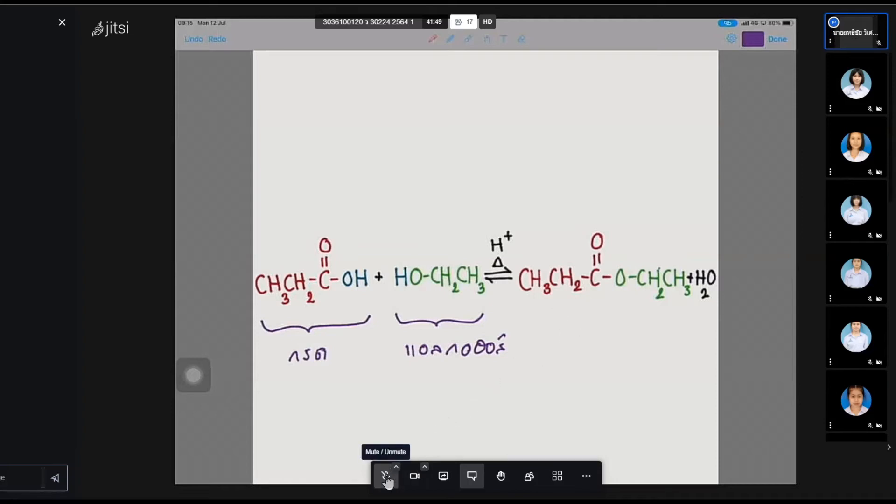In this context, propanoic acid and ethanol form a liquid acid. It's a liquid acid. This is a liquid acid, which is the carboxylic acid. It's a liquid acid.